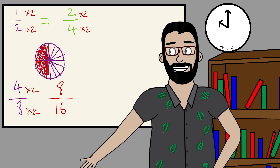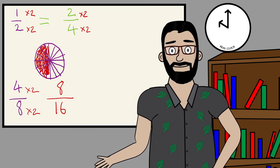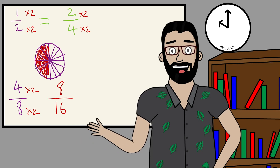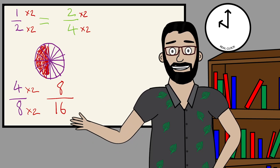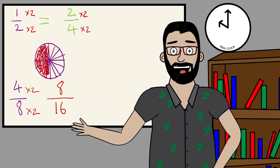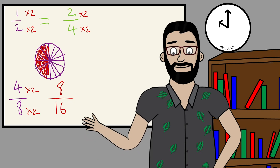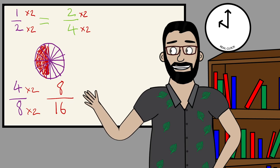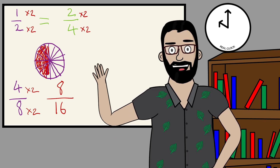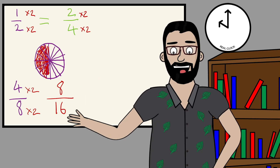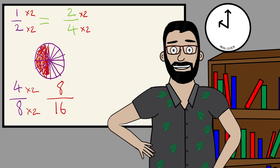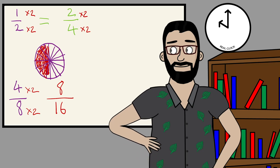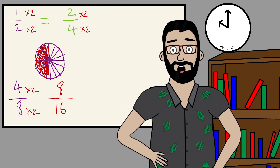Feel free to watch this video back again if you want another recap of what fractions are. Just remember that fractions are an object or a number that's split into equal parts — you cannot have a true fraction if it's split into unequal parts. That's why my drawing on the board is not a true fraction because it's not 100% accurate, but it's just a representation of what the fraction would actually look like. I hope you enjoyed that. I'll see you later.